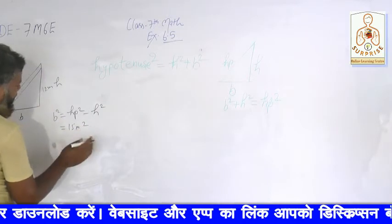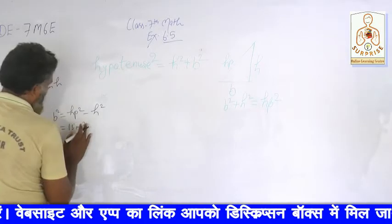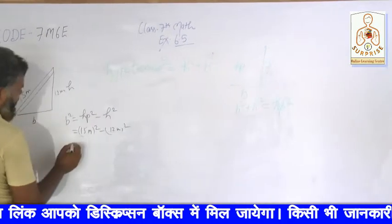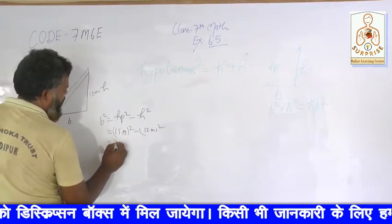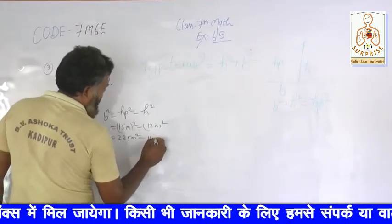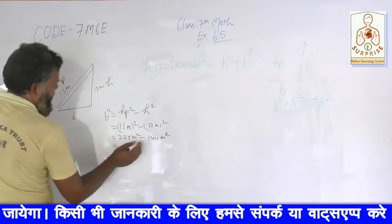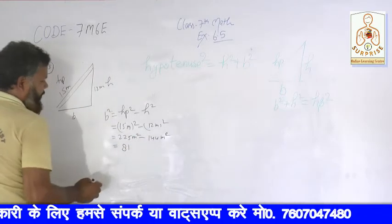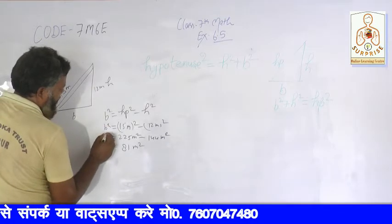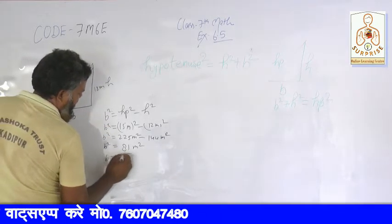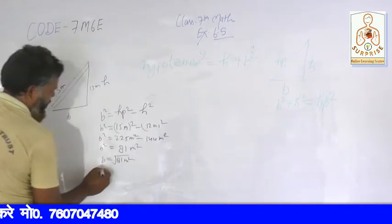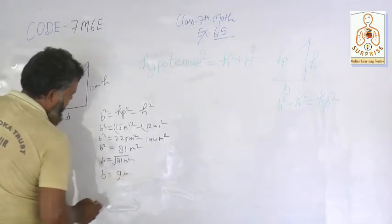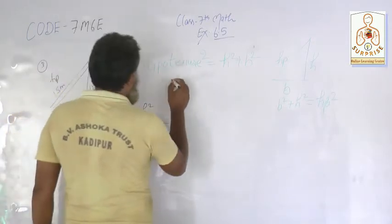Base square is equal to HP square means 15 meter square minus 12 meter square. So that is 225 meter square minus 144 meter square. 225 minus 144: 81 meter square. So this was b square value. So b is equal to 9.